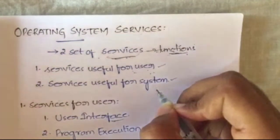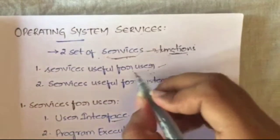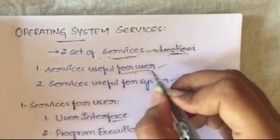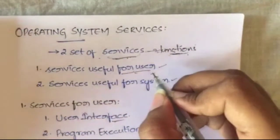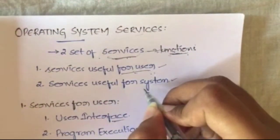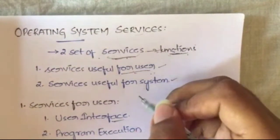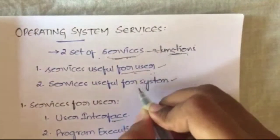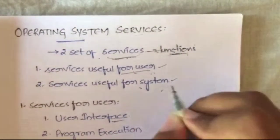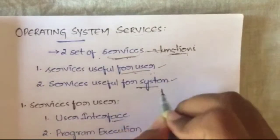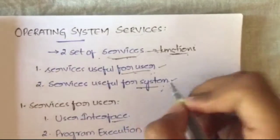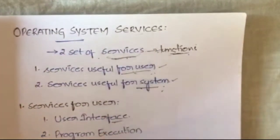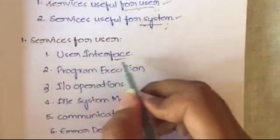In services of the operating system we have two sets: the first one is services useful for the user, and the second one is services useful for the system. Services useful for the user are those used by the user, and services useful for the system are those among all OS services that benefit the system's own operation.